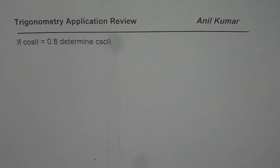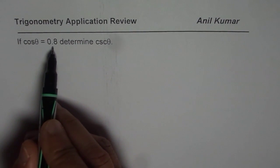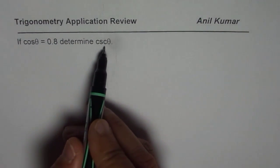I am Anil Kumar and in this video we will understand how different trigonometric ratios are related. We are given cos θ = 0.8, determine cosecant θ.